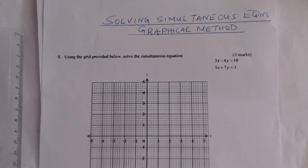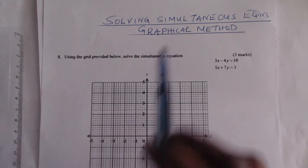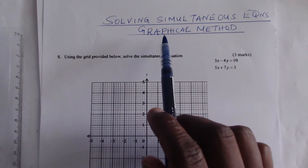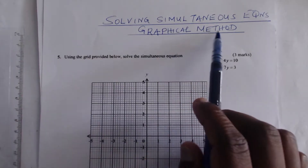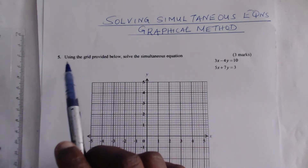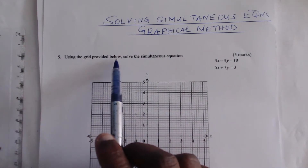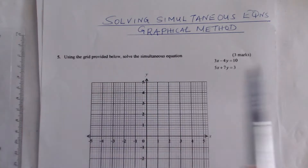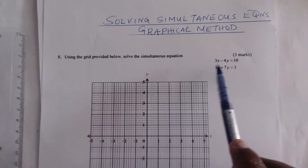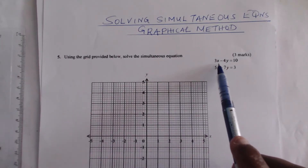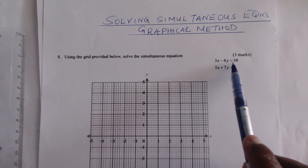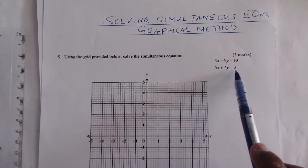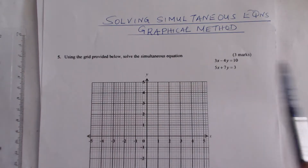Welcome. Solving simultaneous equations using the graphical method. Using the grid provided below, solve the simultaneous equations: 3x minus 4y is equals to 10, and 5x plus 7y is equals to 3.